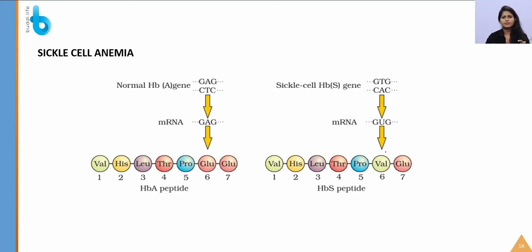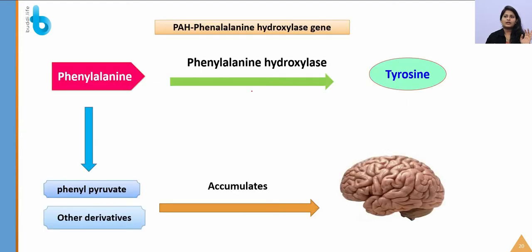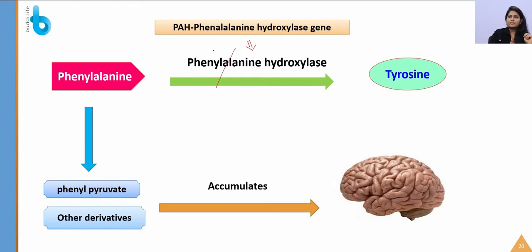Phenylketonuria is an autosomal recessive trait — an inborn error of amino acid metabolism due to a defect in the phenylalanine hydroxylase gene. This gene codes for the hepatic enzyme phenylalanine hydroxylase. If the enzyme is absent, phenylalanine cannot be converted to tyrosine and is instead converted into phenylpyruvate, phenyllactate, and other derivatives, which ultimately accumulate in the brain.